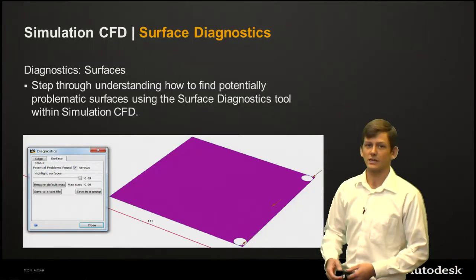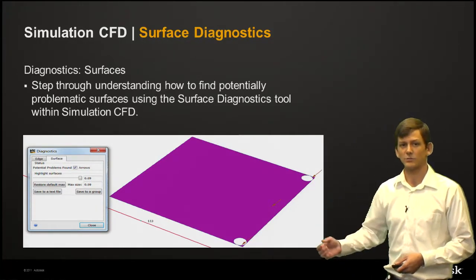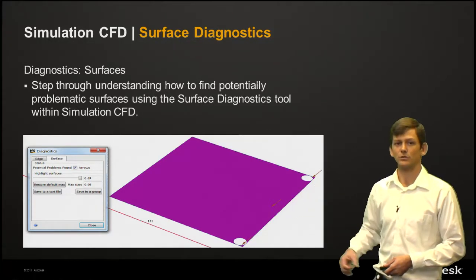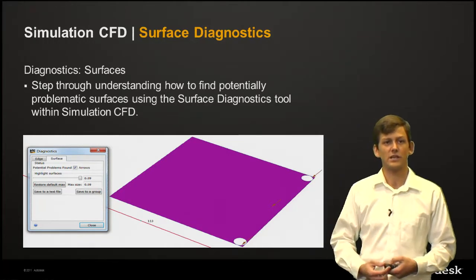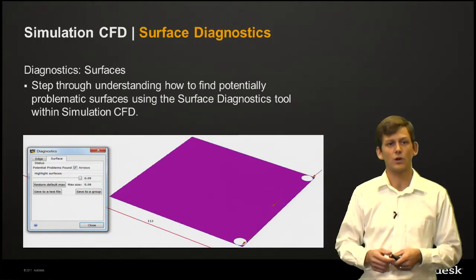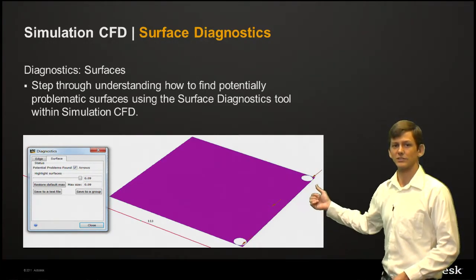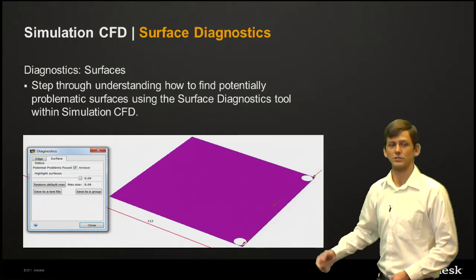With surface diagnostics, the big aspect that we get is an understanding of some of our smaller surfaces or what we call sliver surfaces. Essentially, these surfaces are of a high aspect ratio nature or have very small edge separation. As we look at it, we'll see that there's a very small edge separation in these corners here.